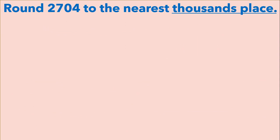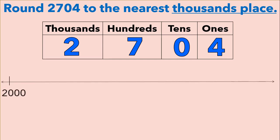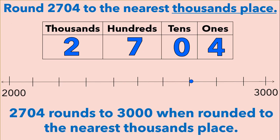Now let's round two thousand seven hundred four to the nearest thousands place. We start with a place value chart and insert our digits. We can see that we have two thousands in two thousand seven hundred four, so our number line is going to start at two thousand. One more thousand than two thousand is three thousand. We're going to break our number line up into ten equal parts, and each line is going to represent one hundred. We're going to plot two thousand seven hundred four on the number line, and we can see that this is much closer to three thousand than it is to two thousand. So two thousand seven hundred four rounds to three thousand when rounded to the nearest thousands place.